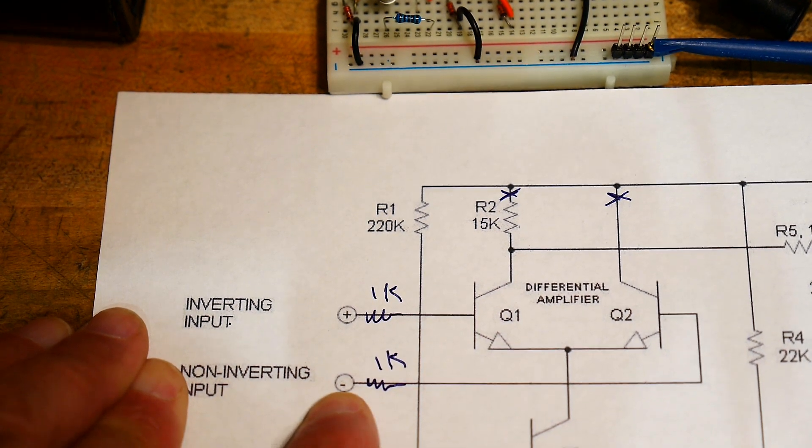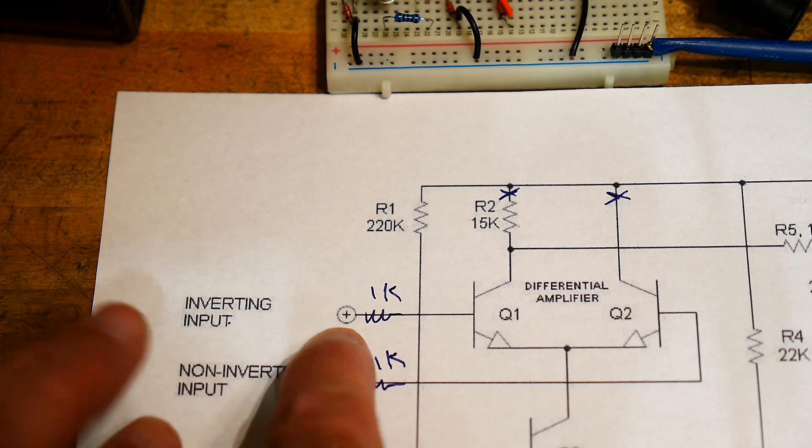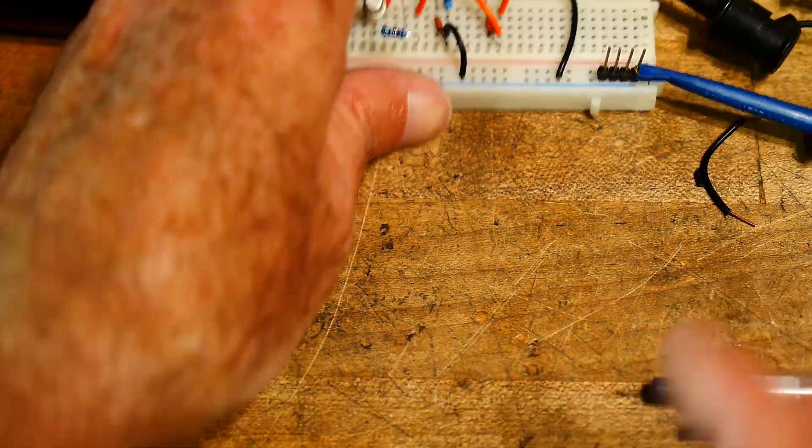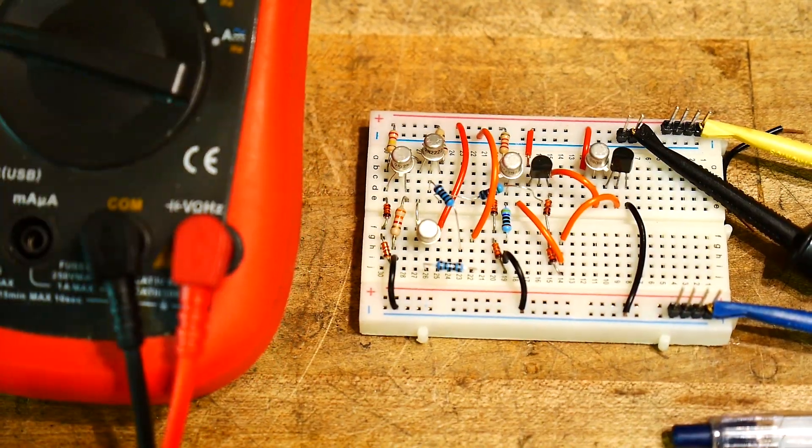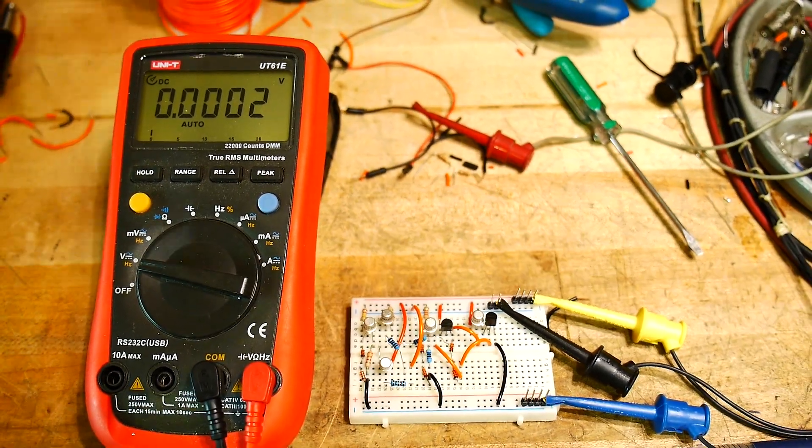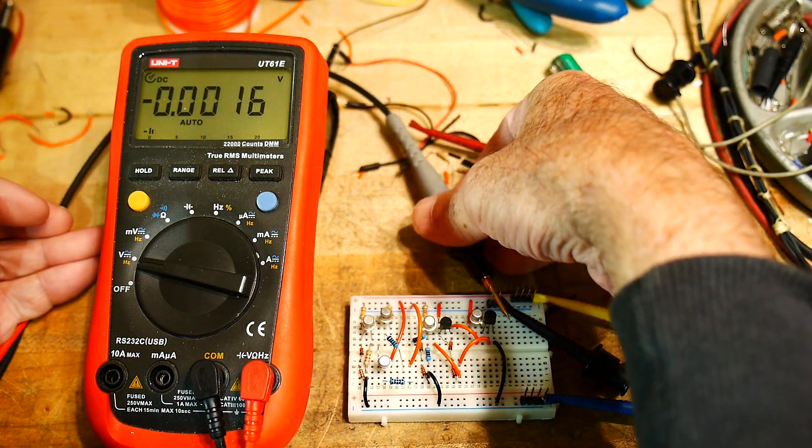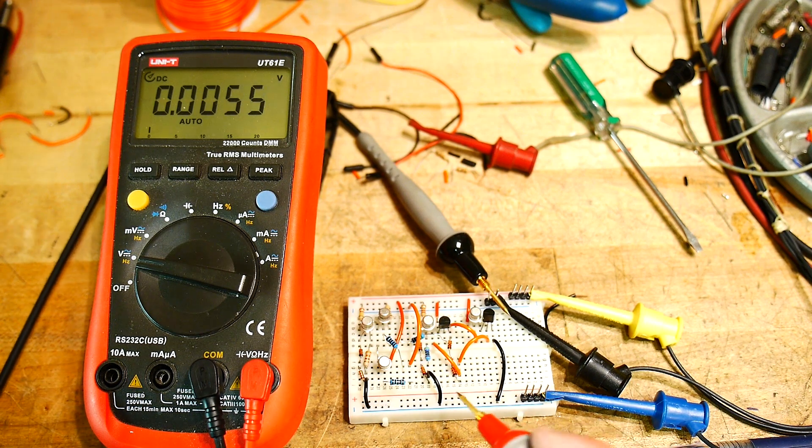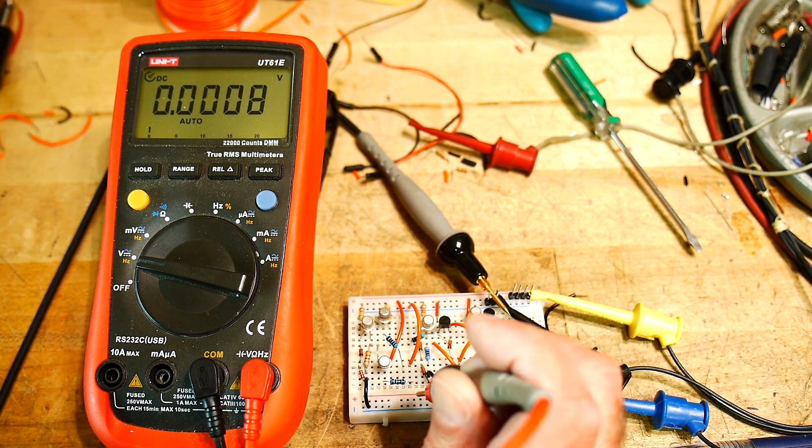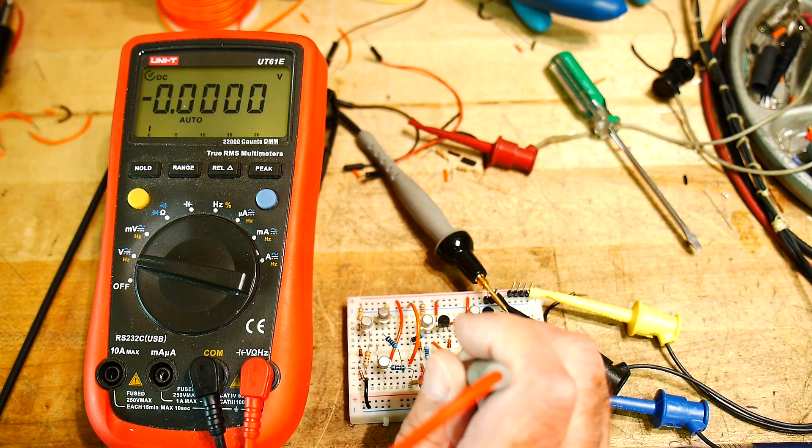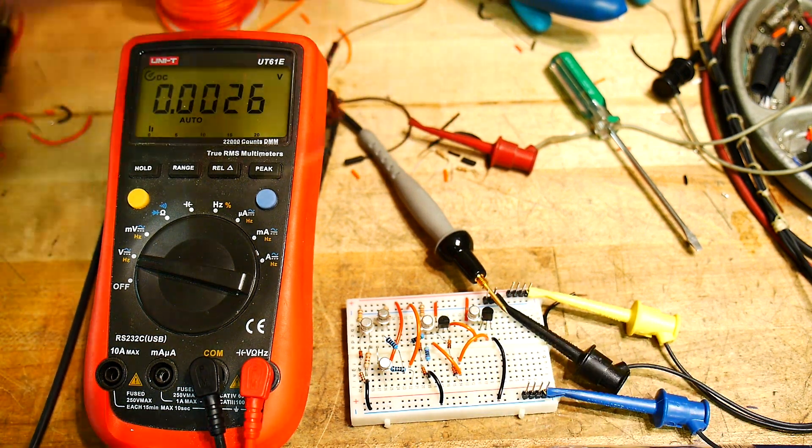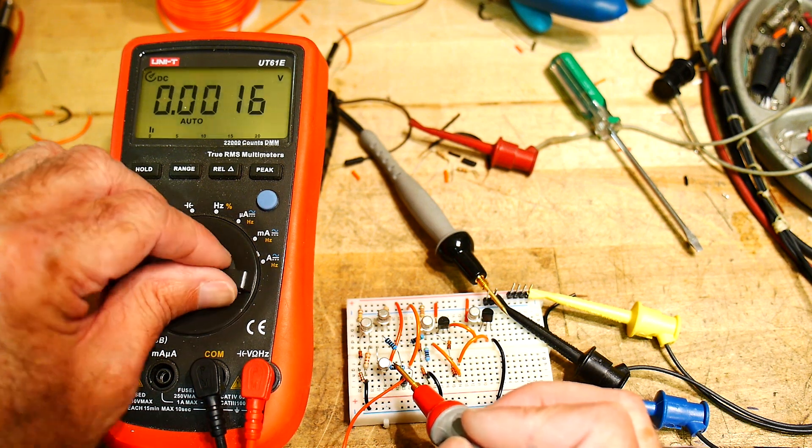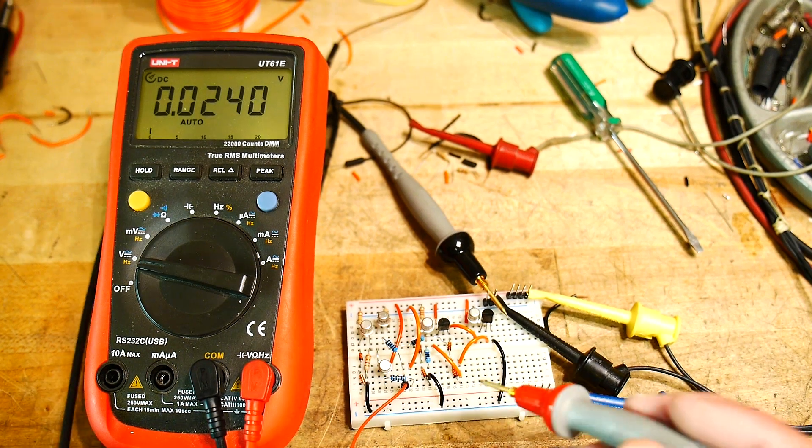So right now I have the negative input grounded, and we'll take the positive input and move it from different voltages, and we'll monitor the output, which is the center of the two transistors. So let me try to get this all on camera. Let's hook up the ground to the negative here. So currently, we have the negative input grounded. Let's make sure that's true. Yeah, it's ground. This transistor here is the 1K to the positive, and this transistor here is the 1K to the negative.